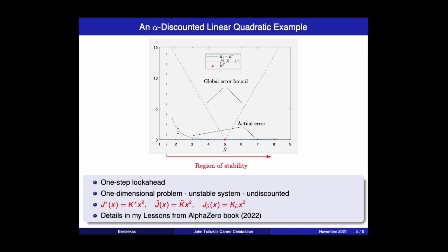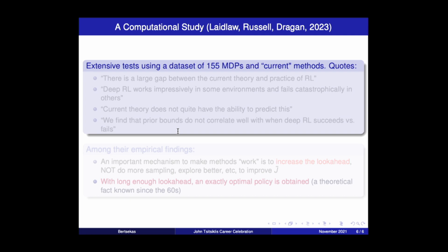But there's an interesting computational study that came out a few months ago from Berkeley. Russell and Dragan are two professors at the EECS department. Russell, of course, is a prominent figure in artificial intelligence. Lightlow is a graduate student, apparently. And they conducted the most extensive computational study on reinforcement learning methods and problems. They compiled a list of 155 MDPs, some of them very large, and gleaned out of data sets that were benchmarks that were available in the literature.